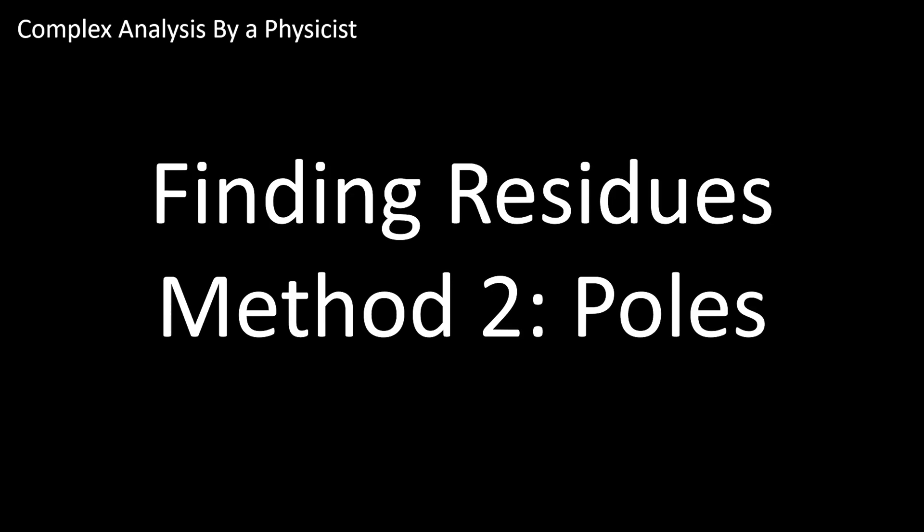Today, we're going to go over a method of finding residues for a pole singularity. This is complex analysis by a physicist, and let's discuss how we find residues with method number two, which is mainly used for poles.